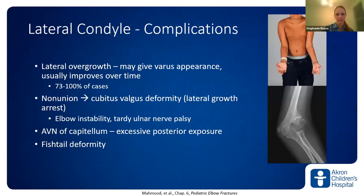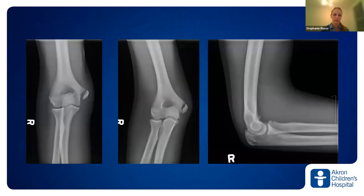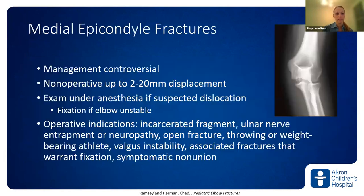Lateral condyle fractures can also have non-union, or various growth disturbances including lateral growth arrest leading to cubitus valgus deformity and tardy ulnar nerve palsy over time. Moving to medial epicondyle fractures: a 14-year-old baseball player presented with two to three weeks of medial elbow pain, followed by a pop and immediate pain and swelling while throwing. With these, it's sometimes difficult to assess displacement on x-rays. Two images can look like a non-displaced fracture, but a CT scan shows the medial epicondyle displaced a centimeter anteriorly.